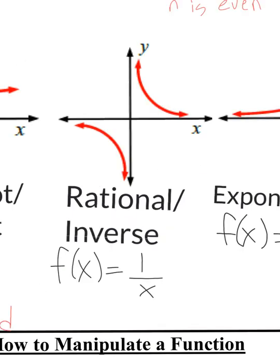The next graph is the rational slash inverse graph. Most of the time in this class you'll see it called the rational graph, but sometimes it is referred to as the inverse graph. This one is the inverse of a linear graph: y = x is the linear graph, and f(x) = 1/x would be the inverse. It makes this split graph — the reason it splits is because we can't divide by 0, so I can't plug in 0. It fractures off like this, and I'll never touch the y-axis and I'll never touch the x-axis.